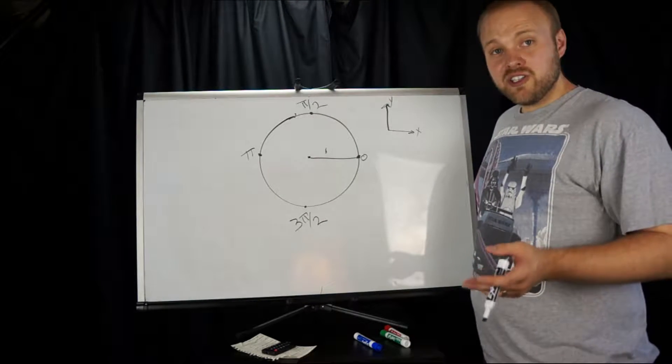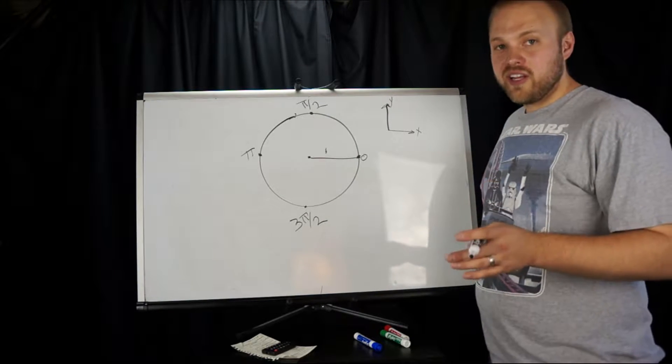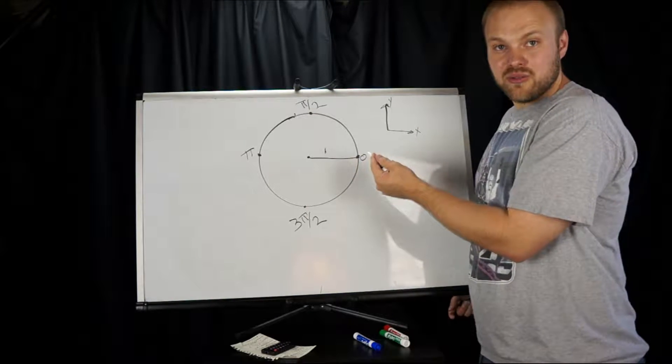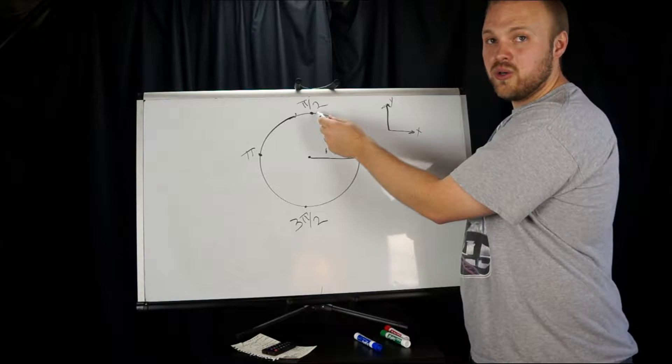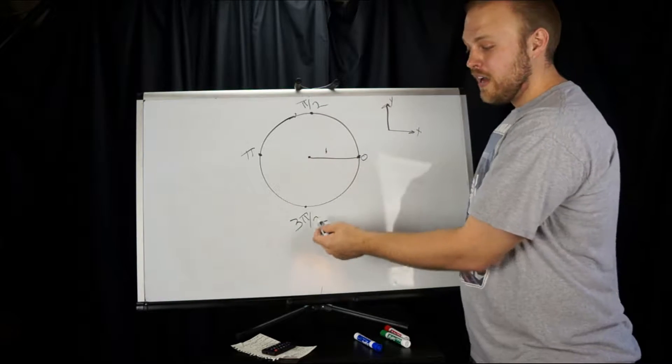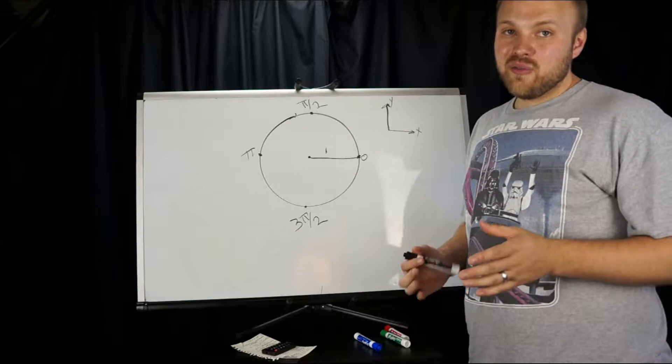Now sine is a function of the Y coordinate as you travel around this circle. So at zero, it's zero, right? At pi over two, it's one. At pi, it's zero again, and at three pi over two, it is negative one.